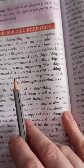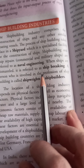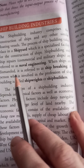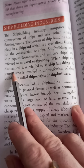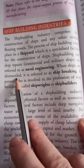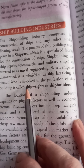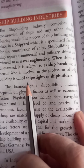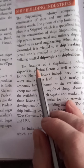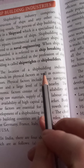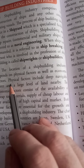When ships are dismantled, it is referred to as shipbreaking — when the shape is changed or broken down. A person involved in the profession of shipbuilding is called a shipwright or shipbuilder. The location of the shipbuilding industry depends on physical factors as well as economic factors.